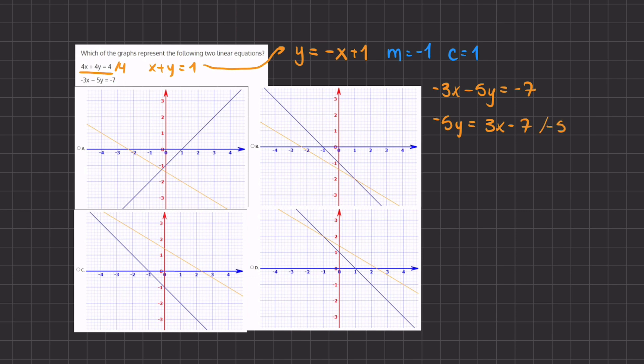Now we'll divide negative 5 on both sides, and we have y equals negative 3 divided by 5x minus, or not minus, plus, because we are dividing by a negative, and a negative and a negative create a positive. So we have 7 divided by 5.